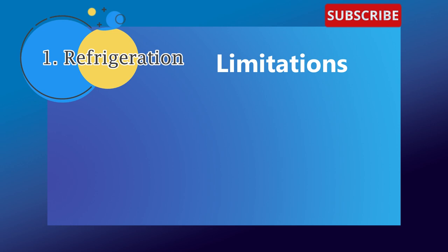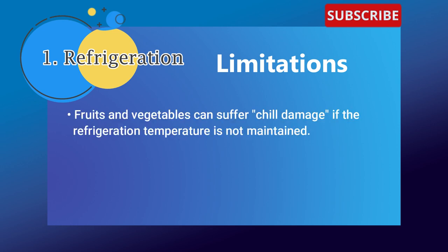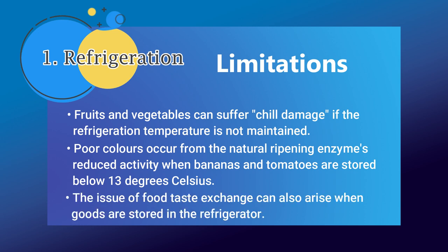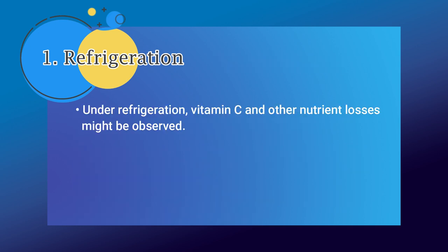The limitations of refrigerated storage include: fruits and vegetables can suffer chill damage if the refrigeration temperature is not maintained. Poor colors occur from reduced natural ripening enzyme activity when bananas and tomatoes are stored below 13 degrees Celsius. The issue of food taste exchange can also arise when foods are stored in the refrigerator. Under refrigeration, vitamin C and other nutrient losses might also be observed.